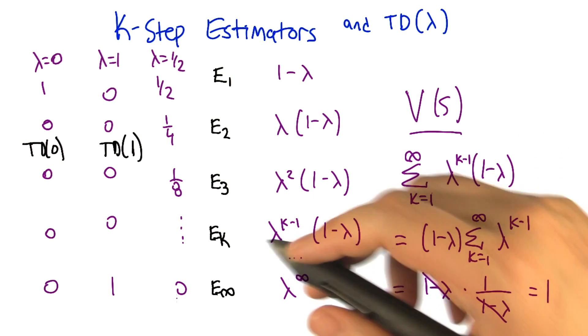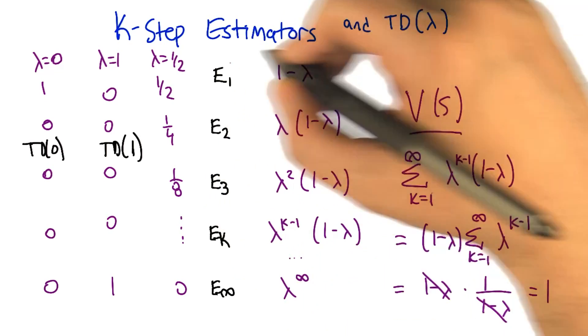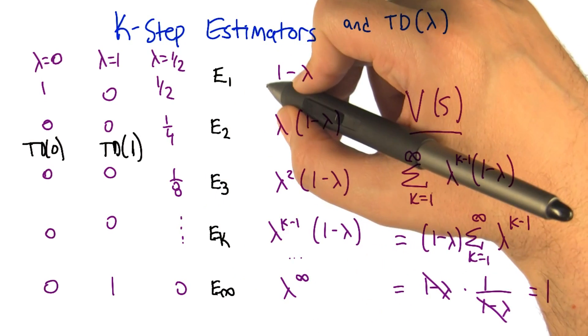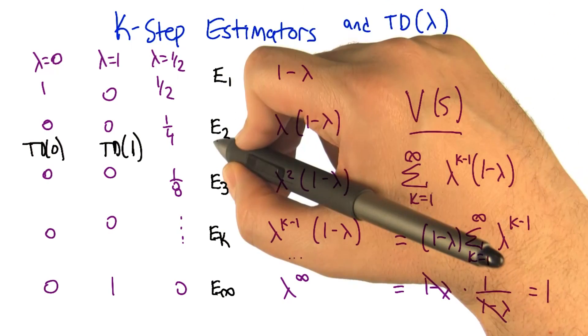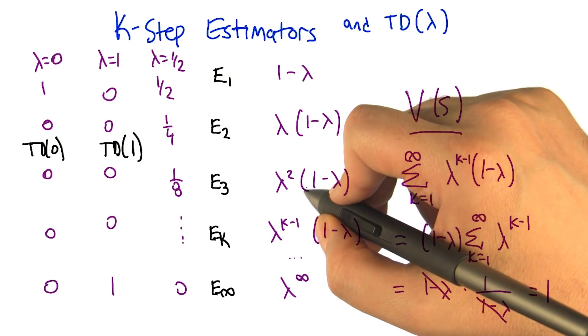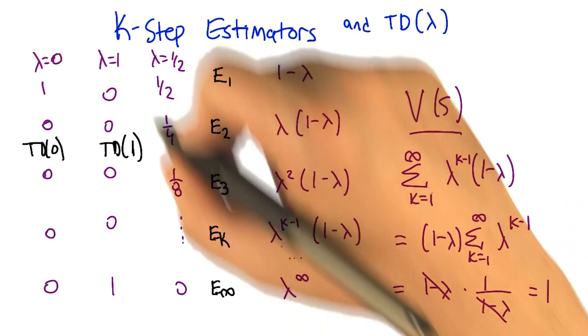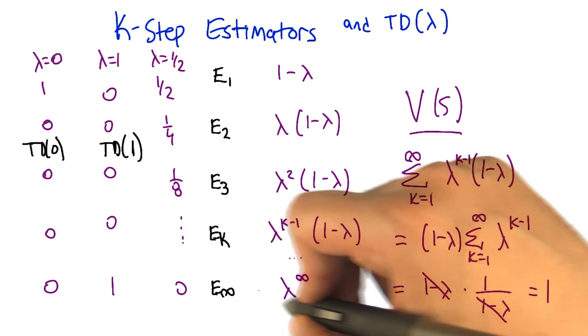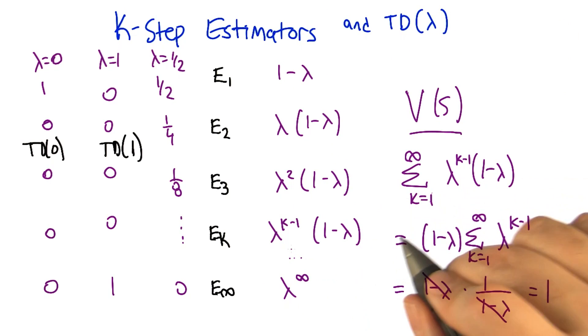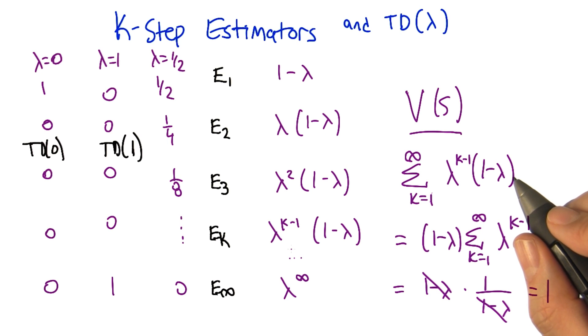But again, we're combining the outputs of all these estimators. We're using whatever update they're suggesting, and moving a little bit in the direction of the first one, and a little less in the direction of the second one, and a little bit less in the direction of the third one, and so on. So yeah, in the limit, we're not actually doing the E infinity estimator at all, but that's okay, because we're doing all these other estimators that kind of lead up to it. So does that help you understand TD lambda better?